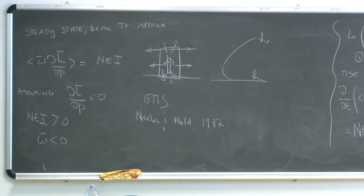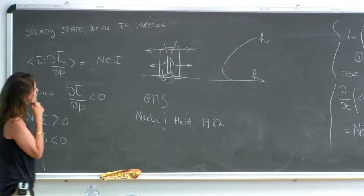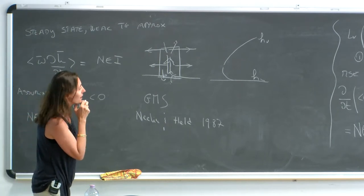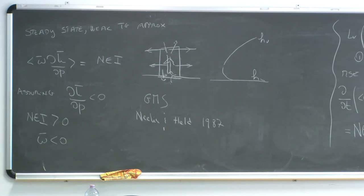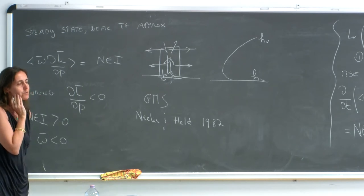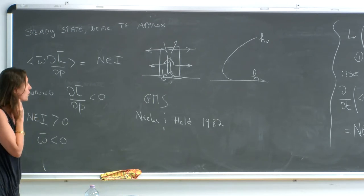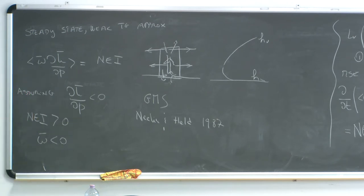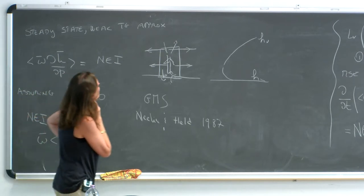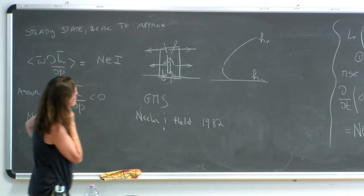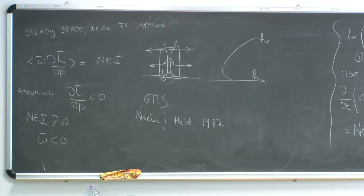The gross moist stability has to do with the interaction between convection and large-scale circulation. While convective quasi-equilibrium provides a powerful framework, there is a lot of active work trying to understand where these assumptions break down and when we need to consider deviations from convective quasi-equilibrium.